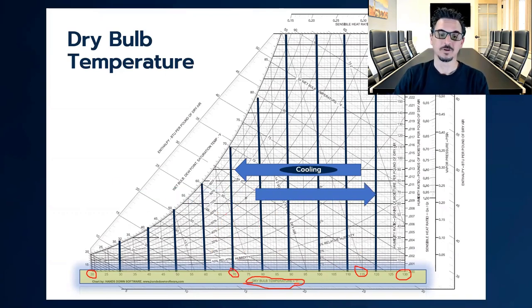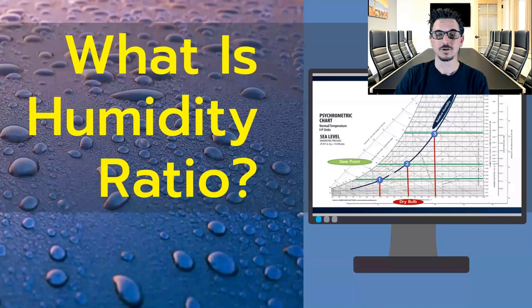If we're moving from the left to the right, we are heating the air. About 78 to 120. So we're adding heat to the air. That's what the heating process looks like. As far as cooling and heating, this is what's going on visually on the psychometric chart.